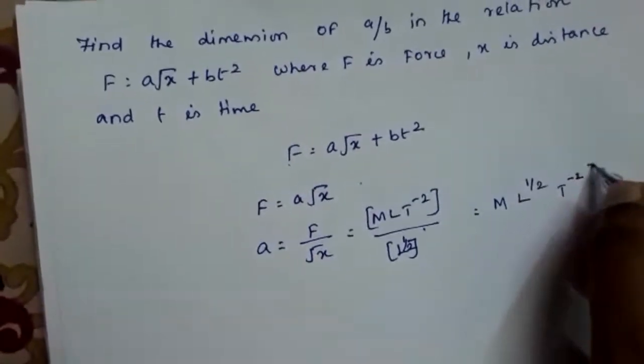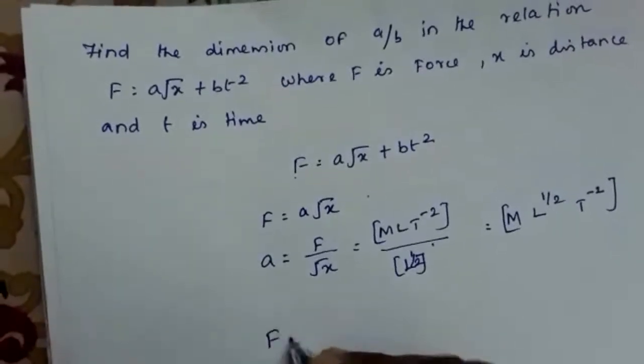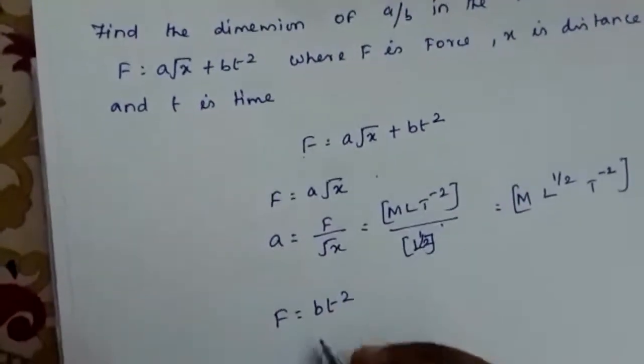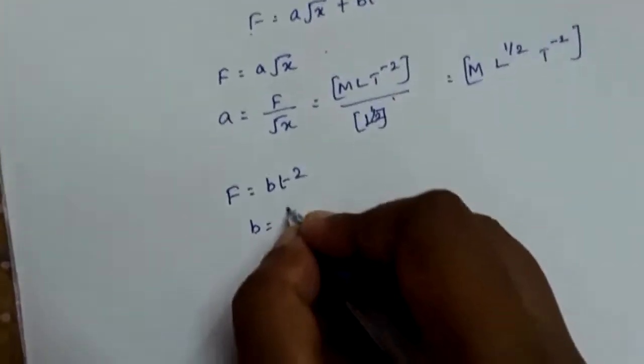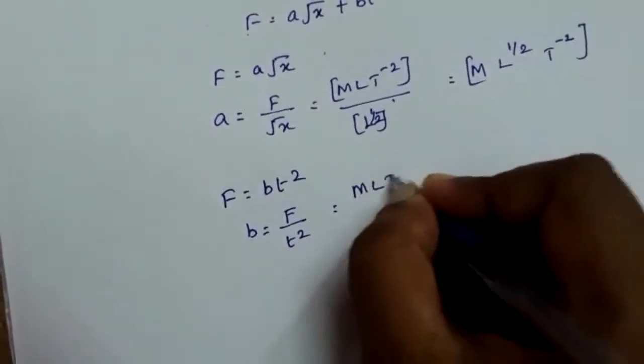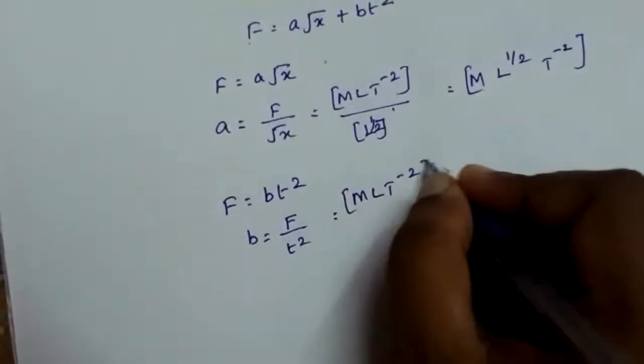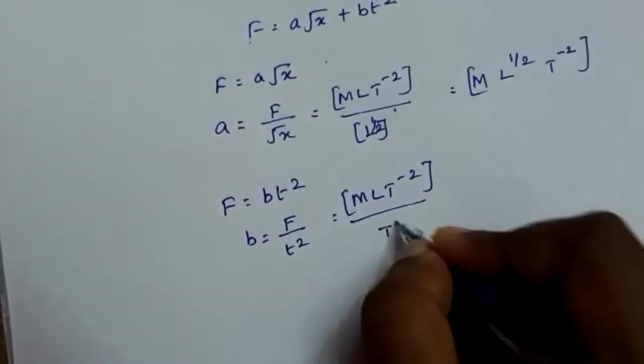Now equating the next term, F = bt², so b = F/t². So it is MLT⁻² divided by t², which is T². So you will be getting MLT⁻⁴.